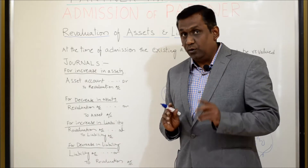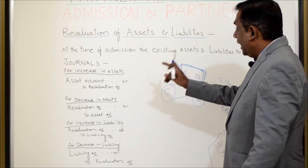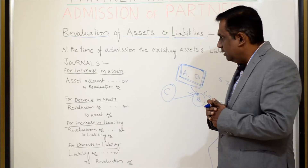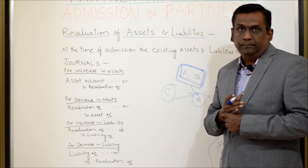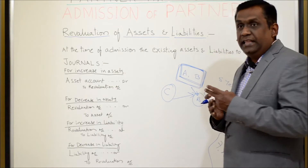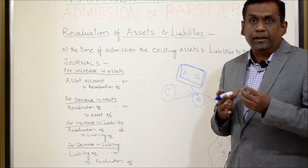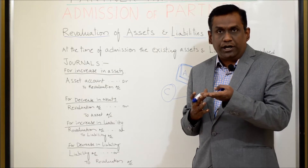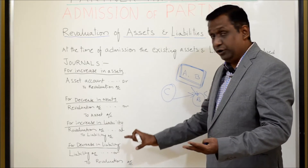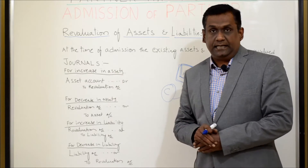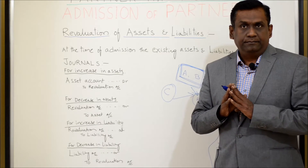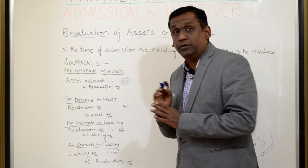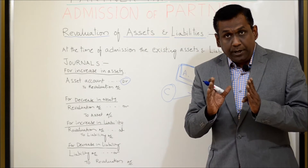I hope you are clear. Now when we do the revaluation of assets, we need to record journal entries as well. How do we record those journal entries? When there is an increase in asset, what entry do I book? When there is a decrease in asset, what entry do I book? When there is an increase in liability, what entry do I book? These are the things we need to learn. When there is an increase in asset — asset is a debit balance — if the value is increased, the debit balance will increase, because of which we debit the asset account.